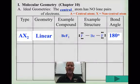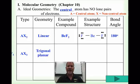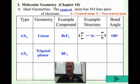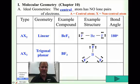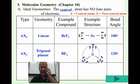The second type is AX3, called trigonal planar. The example here is boron trifluoride, BF3. Boron is central and the three fluorines are on the outside. The bond angles run between the fluorines — from here to here, from here to here, from here to here — so you can think of 360 degrees total around the plane. The bond angle ends up being 120 degrees; each fluorine is 120 degrees from the others.